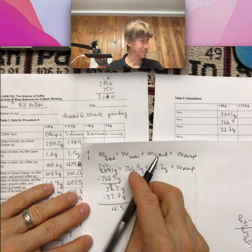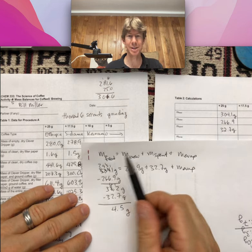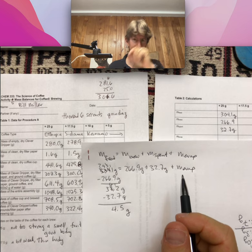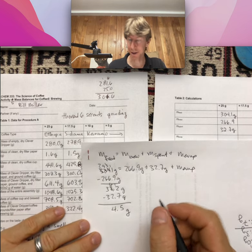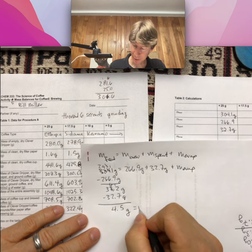This also, let's say this, that this is evaporation. When I think about it, this might be—and I took my clever dripper upstairs—there sometimes gets a gram or two caught in the clever dripper itself. So as a source of error,